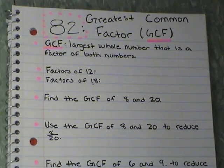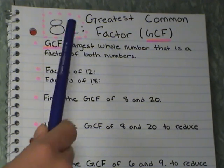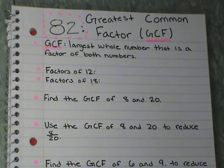Tonight's lesson is lesson 82 where we're finding the greatest common factor or also called GCF. We practice finding the factors of whole numbers. In this lesson we're going to practice finding the greatest common factor of two numbers. The greatest common factor of two numbers is the largest whole number that is a factor of both numbers. So that's what I wrote down for our definition. And I always use the abbreviation GCF. It's a lot easier than saying greatest common factor over and over again. So the GCF is the largest whole number that is a factor of both numbers. I'm going to show you what I mean by that.